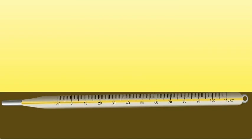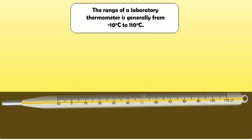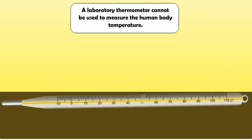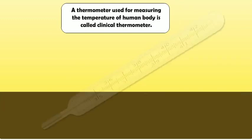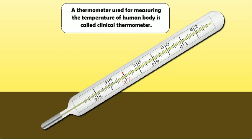A thermometer is a device for measuring the temperature of an object. The range of a laboratory thermometer is generally from minus 10 degrees Celsius to 110 degrees Celsius. A laboratory thermometer cannot be used to measure the human body temperature.